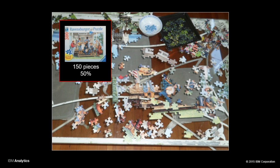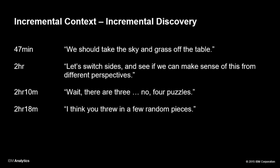In all four of the puzzle projects I've done, with less than 50% of the observation space, you can make an extraordinary claim about the overall scene, and I find that inspiring. Forty-seven minutes in, they realized no matter how much energy they spent on connecting more sky and grass, it wasn't helping them better understand the scene, so they self-optimized and stopped applying any energy to those pieces. Two hours in, the oldest 17-year-old female said, let's switch sides and see if we can make sense of this from different perspectives — and I thought that was really a genius comment. They realized there was a fourth puzzle. Two hours and 18 minutes in: I think you threw in a few random pieces. And the oldest boy just looked at me and said, you're evil — and I'm like, I love this.